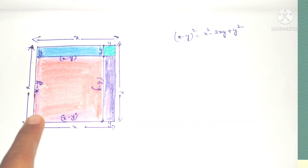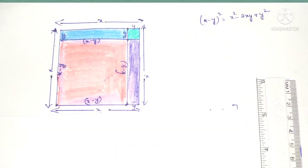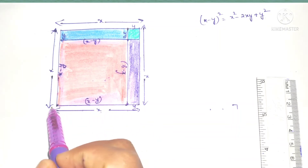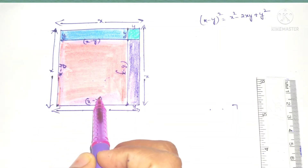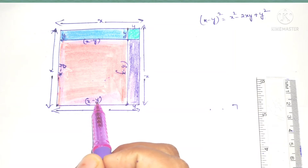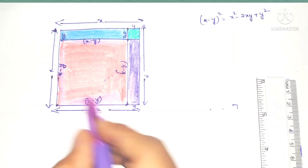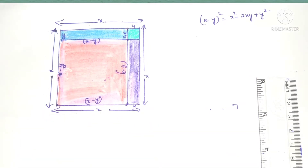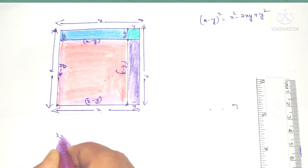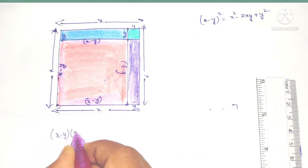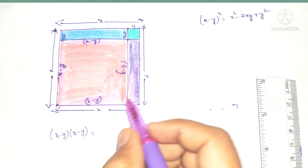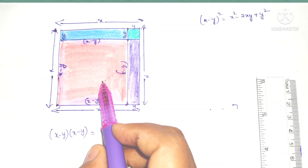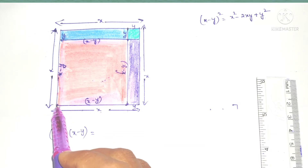Now we want to prove x minus y whole square. This orange color shaded area is in the form of a square. The formula for area of a square is side into side. So this side is x minus y and this side is x minus y, so x minus y into x minus y.